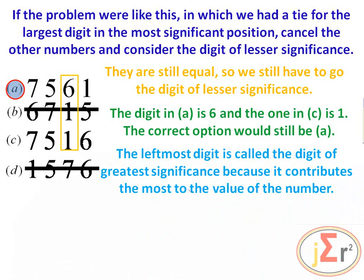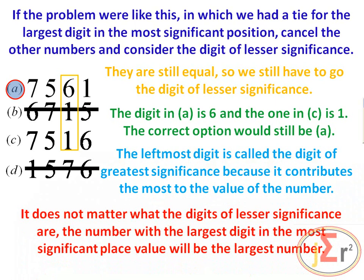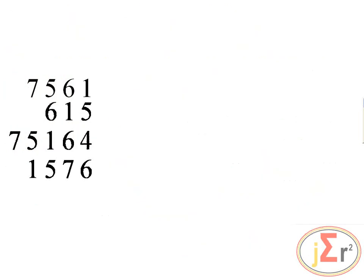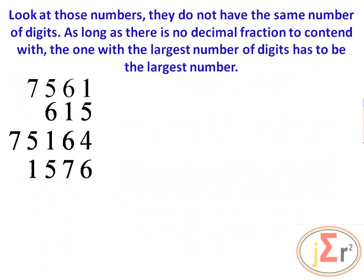The leftmost digit is called the digit of greatest significance because it contributes the most to the value of the number. It does not matter what the digits of less significance are. The number with the largest digit in the most significant place value position will be the largest number.